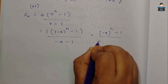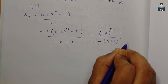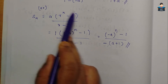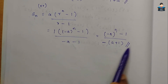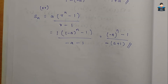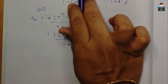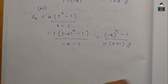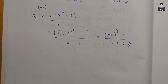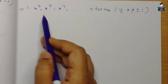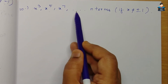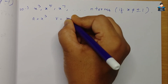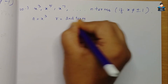If we had used the other formula — Sn = a × (r^n − 1)/(r − 1) — substituting gives the same result with opposite signs, so both formulas yield the same answer. Since r is unknown here, either formula can be used. Now for the 10th question: x³, x⁵, x⁷, ... up to n terms. First term a = x³.